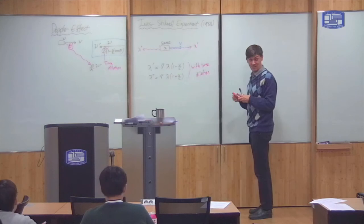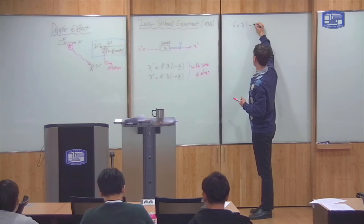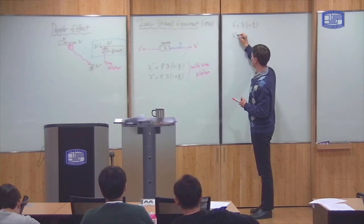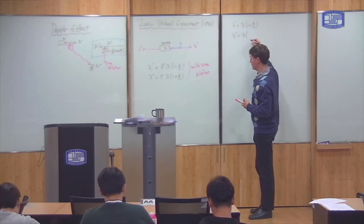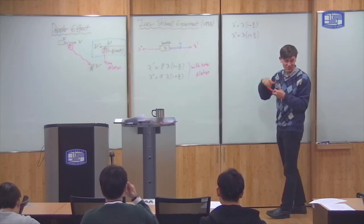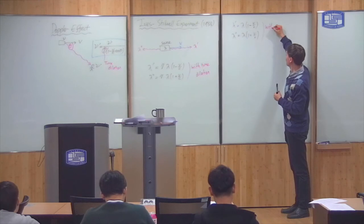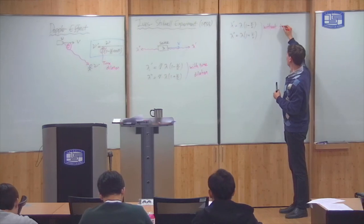Without time dilation, you would just simply get lambda prime is lambda 1 minus b over c. Lambda double prime is lambda 1 plus b over c. So the gamma just goes away. So this is without time dilation.